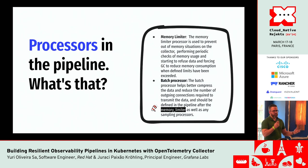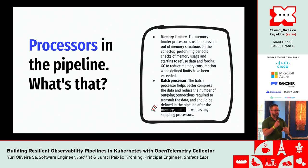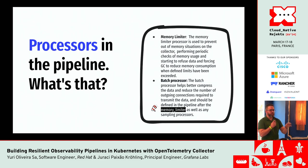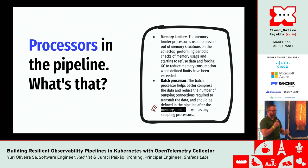The batch processor splits telemetry data into batches of the proper size that your infrastructure is expecting. It's also worth mentioning the future of these processors: there is a perspective that the memory limiter will be replaced from a processor to an extension. And the batch processor, instead of being used as a processor, will become a parameter of an exporter in the OpenTelemetry Collector.